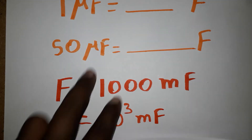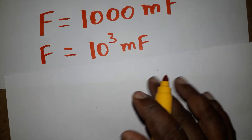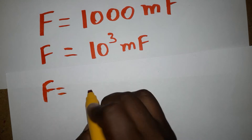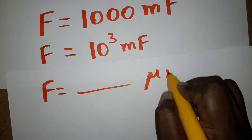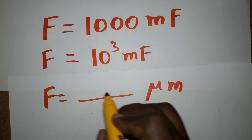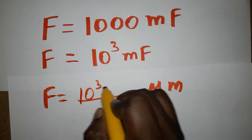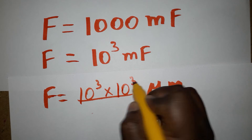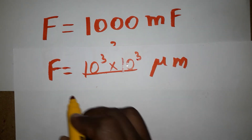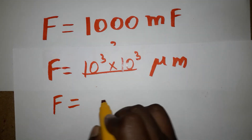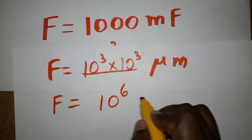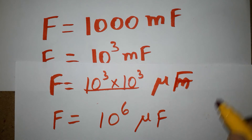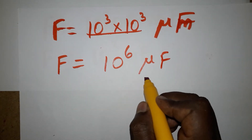Also, 1 milli farad is equal to 10 power 3 micro farads. So for the example: 1 farad equals 10 power 3 milli farads, and 1 milli farad equals 10 power 3 micro farads. Adding the exponents: 3 plus 3 gives us 1 farad equals 10 power 6 micro farads.